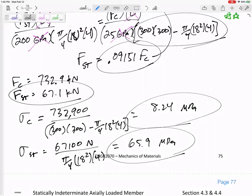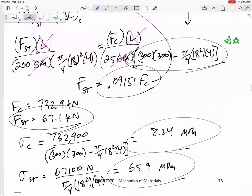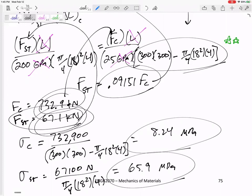It didn't ask for it, but we could find the delta L, right? Once you know these forces right here, you could plug that in right here. Or you could plug this in right here, and we could get the delta L, the FL over EA of each of those sections. We know it's going to be the same.